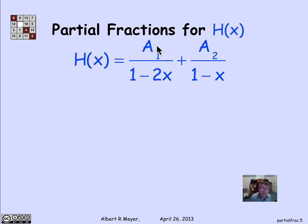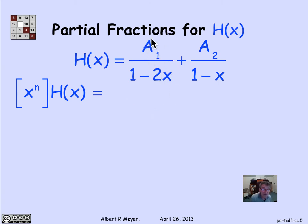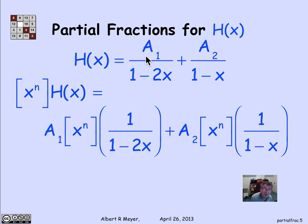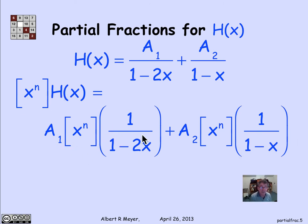Once I've expressed h(x) as a1 over (1 minus 2x) plus a2 over (1 minus x), I know exactly the form of the nth coefficient of h(x), because I get it as the sum of the nth coefficient of each generating function. In other words, it's going to be a1 times the nth coefficient of 1/(1 minus 2x) plus a2 times the nth coefficient of 1/(1 minus x). So this is exactly the form the nth coefficient of h(x) is going to take — the sum of those two things.